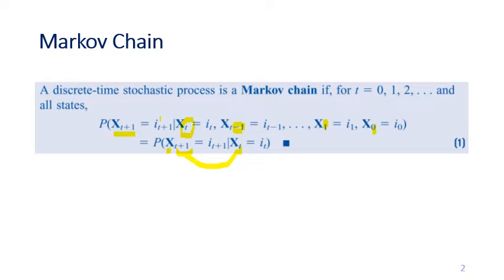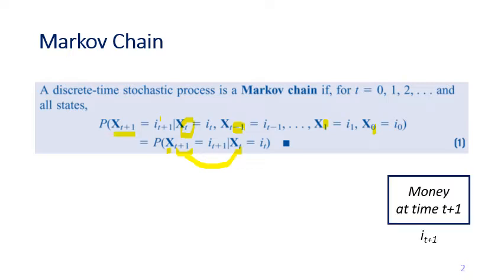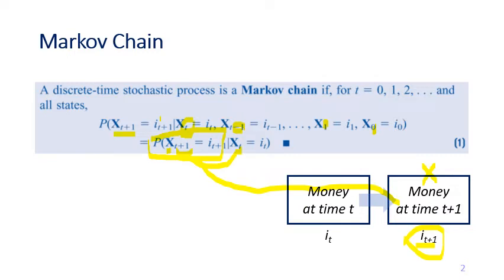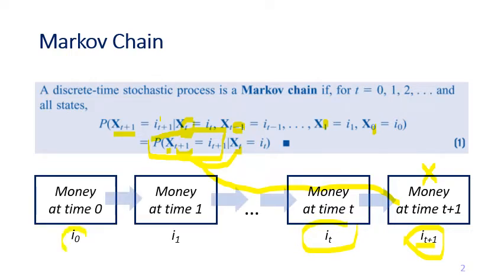Let's illustrate this with something more concrete. If we define x as the amount of money that you have, and you want to know the value at time t plus one, equals i at t plus one — so you want to know the probability that at time t plus one we have money with the amount of i(t+1) dollars — obviously it is related to the money you have at time t, which is i(t), and all the way back to i zero at the beginning of history. Looking at this entire history means you are modeling this problem as a general stochastic process.